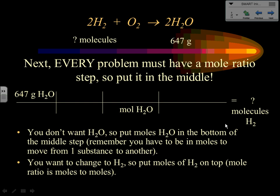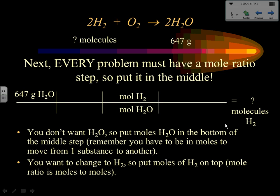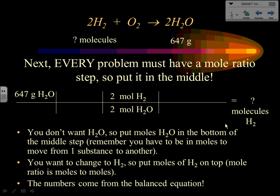I want to get to hydrogen, so I put hydrogen on top. When going from one substance to another you must be in units of moles, so put moles on top and bottom. Whatever substance you're starting with goes on the bottom; the ending substance goes on top. Then get the numbers from the balanced equation — it says 2 moles of hydrogen and 2 moles of water, so put 2 by each. The mole ratio step is done.